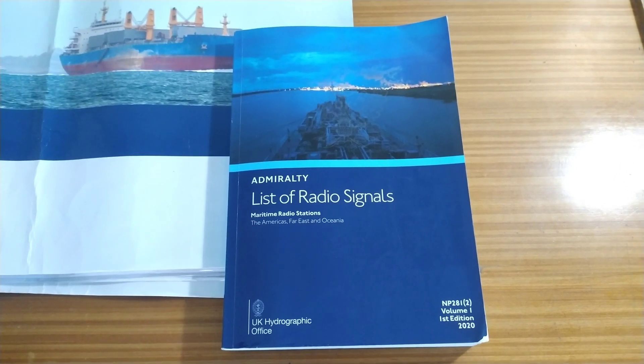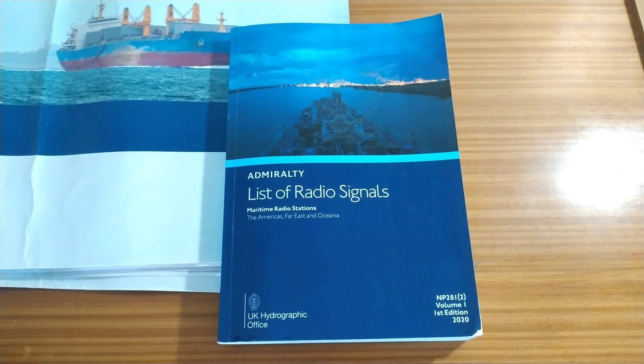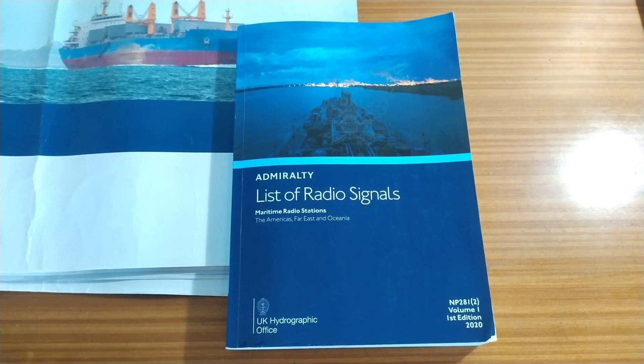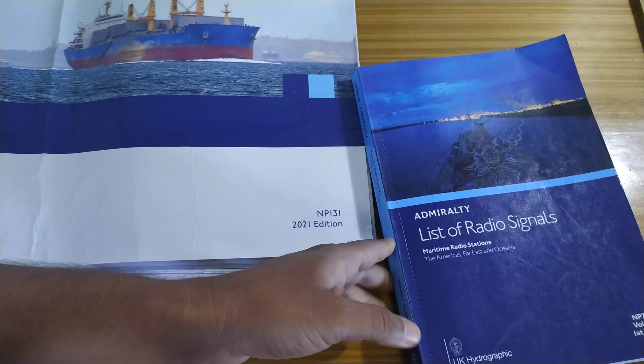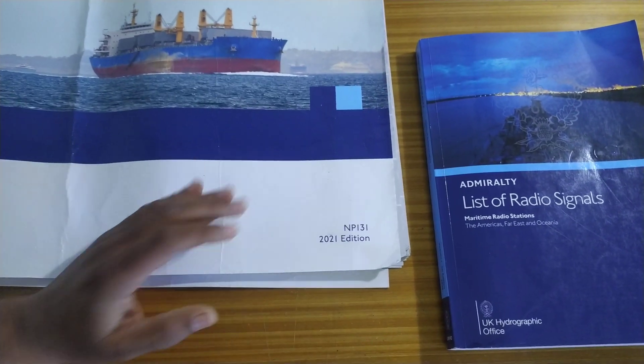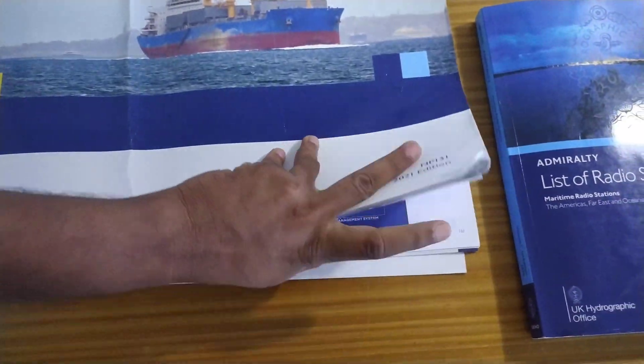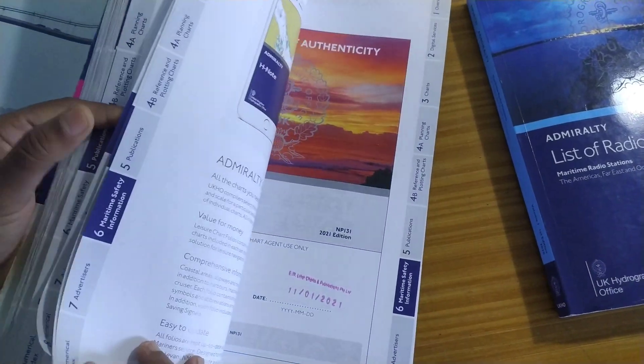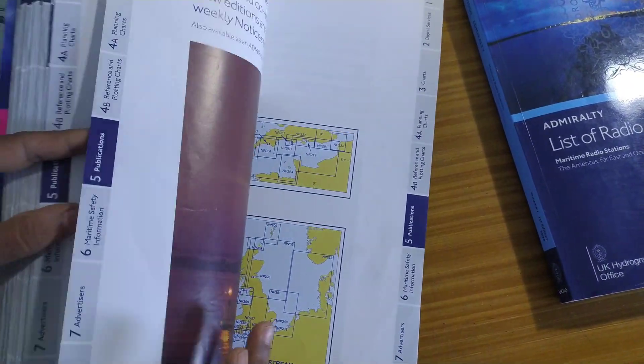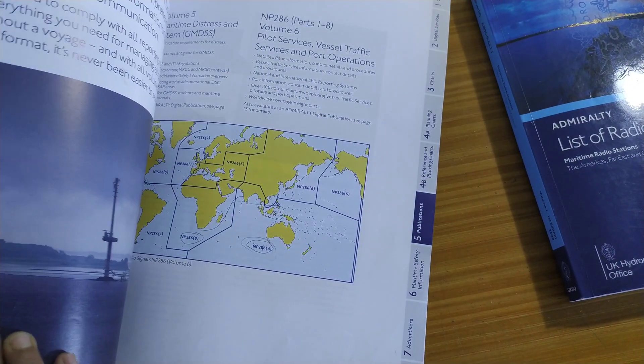Good afternoon. Today we will discuss ALRS Volume 1 or NP 281. This is basically our book. Before that, I will show you how to select these books and how to check for updates. This is our catalog, 2021 edition. In this catalog, if you go to the publications page, under publications comes the ALRS. This is the list of all the ALRS in the world.